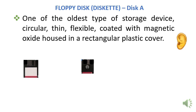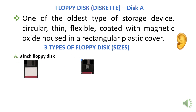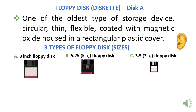Let us look at the three types of floppy diskette that we have. Number one is the 8-inch floppy disk. Number two is the 5.25-inch floppy disk. And the third one is the 3.5-inch floppy disk. As you can see, they are being categorized according to their sizes. The biggest one is the 8-inch floppy disk, followed by the 5.25-inch floppy disk, and the last one is the 3.5-inch floppy diskette.